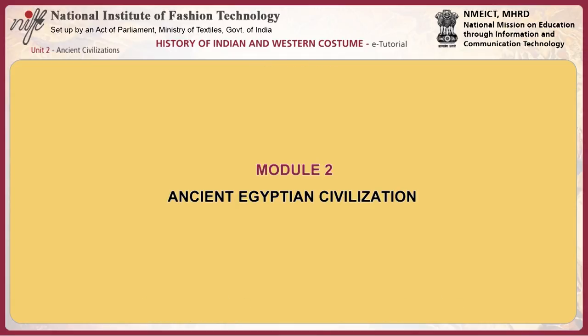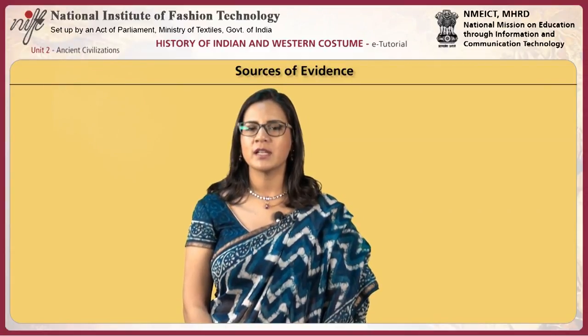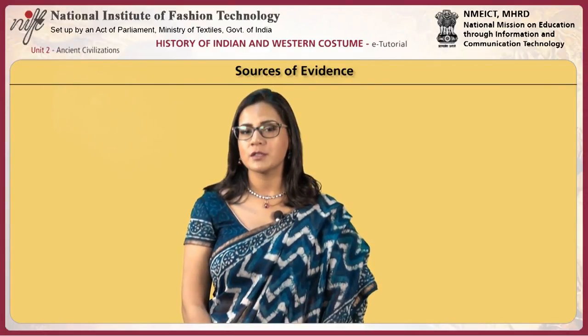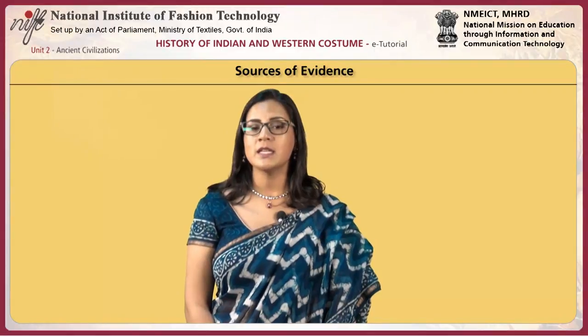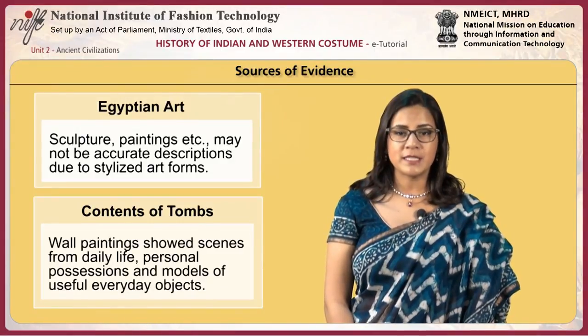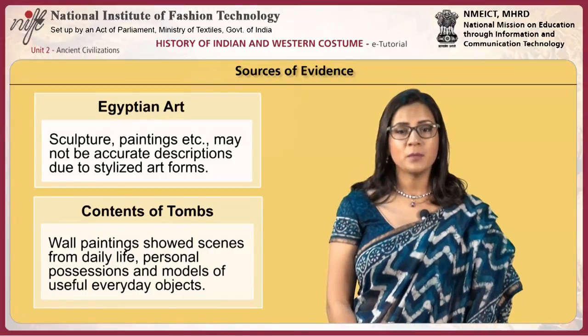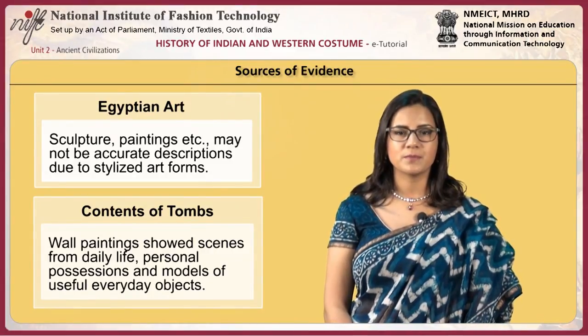This module focuses on ancient Egyptian civilization, costume and culture. The main evidence of ancient Egyptian civilization is from Egyptian art, the contents of tombs and decorative motifs. Sculpture, painting, etc. may not be accurate descriptions due to stylized art forms.